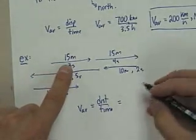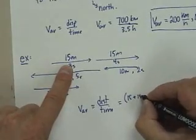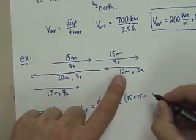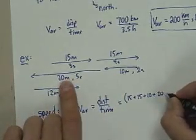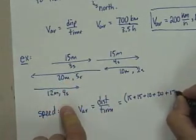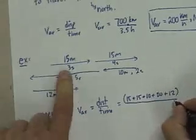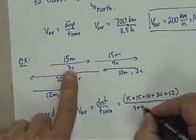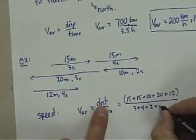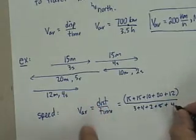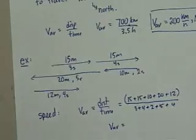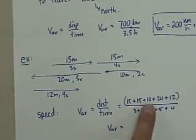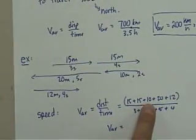So your total distance would end up being 15 plus 15 plus, we go plus because we don't care about direction, plus 10, plus 20, plus 12. And it occurs in a time frame of 3 plus 4 plus 2 plus 5 plus 4. So your average velocity, sorry, your average speed is going to end up being 30 plus 30 plus 12.